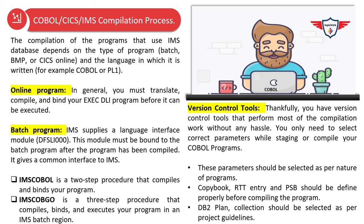You might find it difficult to memorize all the steps involved in compiling COBOL DB2, COBOL CICS, or COBOL IMS programs. The simple solution is to use version control tools such as Changeman and Endeavor, which are generally used to maintain your programs and do most of the work for you — including compiling COBOL DB2, COBOL CICS, and COBOL IMS programs. You only need to select the correct parameters when staging your code for the first time. Before compiling, make sure you have copy books, RDT entries, and PSB entries defined properly, and follow project guidelines for the DB2 plan package and commit frequencies.